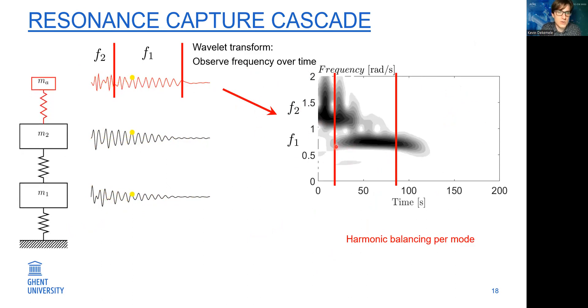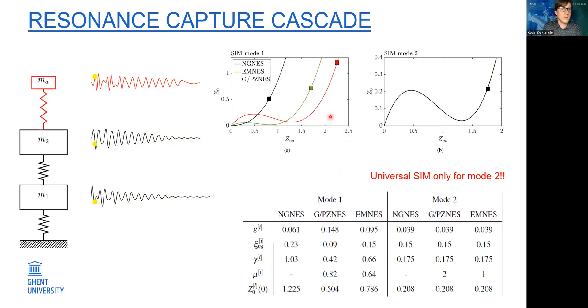The idea is now to do harmonic balancing but for each mode separately. Now for the universal sim, I tried to generate universal sim and I was able to for one mode only. Let's say I chose these parameters here. These parameters result in the same sim for mode two, but these parameters are not the same then in mode one. This results in a different sim for mode one, which will mean we expect a different behavior now per configuration.